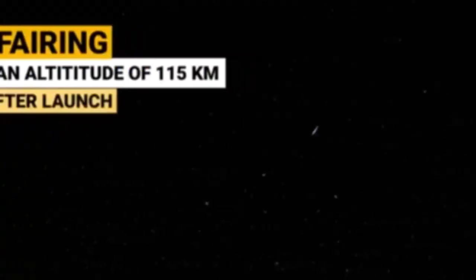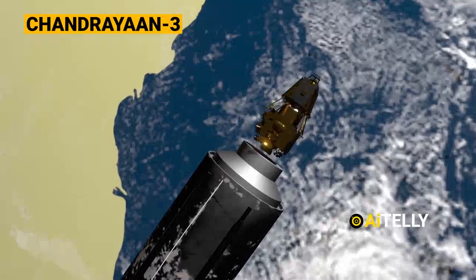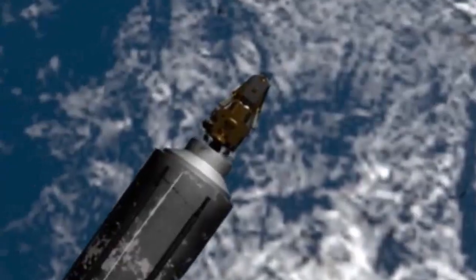Step number five, Chandrayaan-3 integrated module separates from the launcher and opens its solar panels.